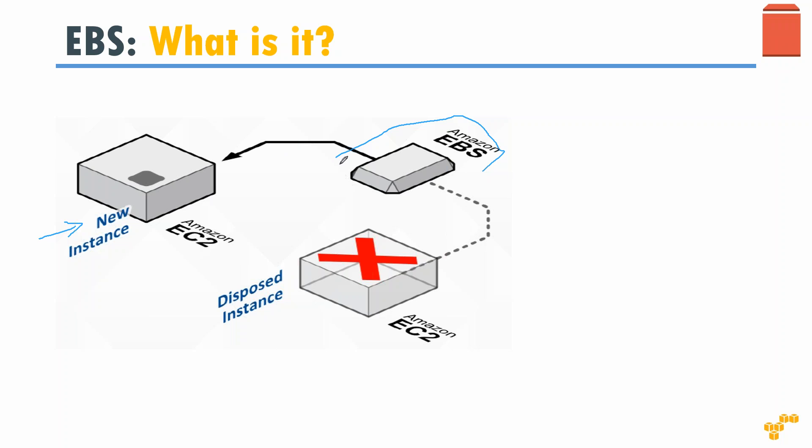Especially if you are attaching it for the second or third time, the number of steps comes down even more — you are not going to format it again. Think of an external hard disk: the very first time you use it on a Mac you need to format it for Mac format, but when you connect it the next time you don't. Likewise with EBS, when you attach the disk for the first time you format it and choose the format — it might be NTFS or a Linux-compatible format.